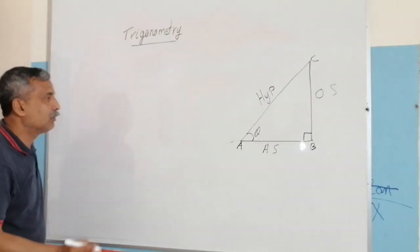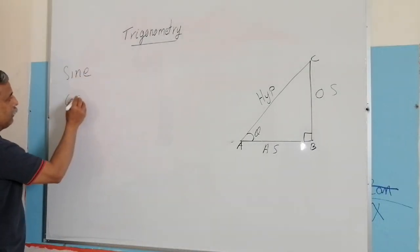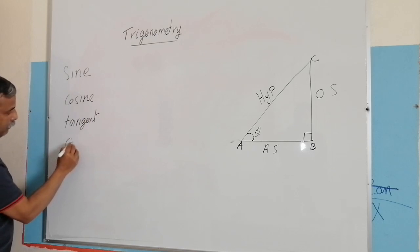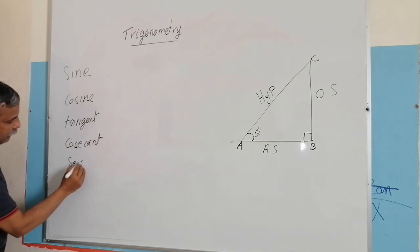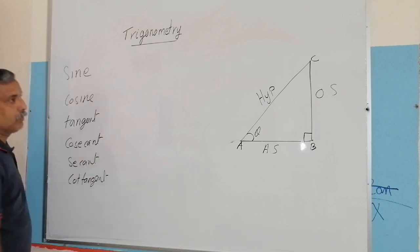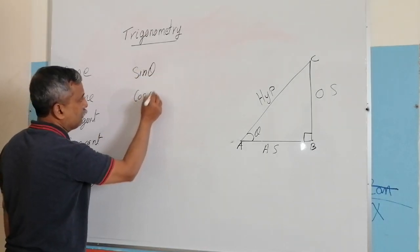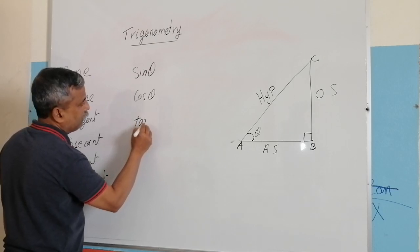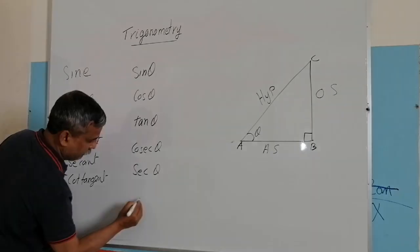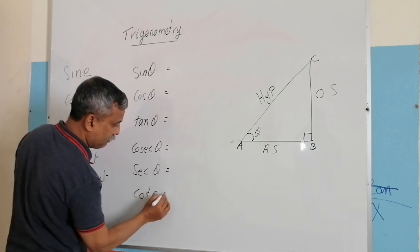Let me define the six trigonometric ratios. They are sine, cosine, tangent, cosecant, secant, and cotangent. In short we can call them sine of angle theta, cos of angle theta, tan of angle theta, cosec theta, sec theta, and cot theta. Let me give you the definition of each of these.